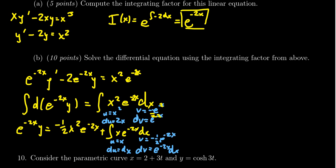Putting it all together, we get: e to the negative 2x times y equals negative one-half x squared e to the negative 2x, plus the uv term which gives negative one-half x e to the negative 2x.